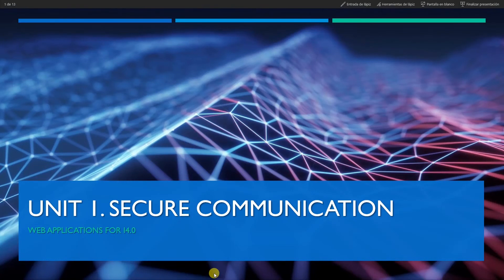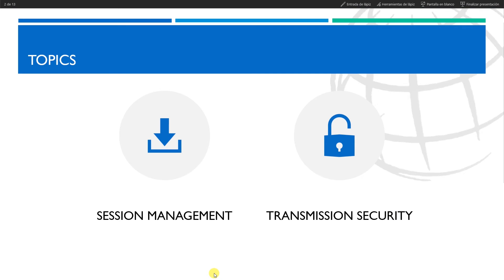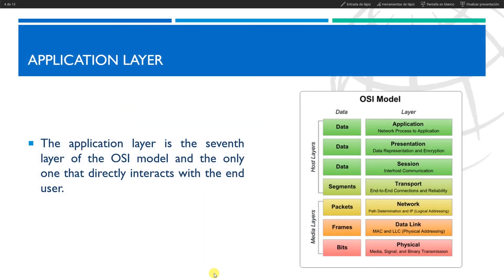We continue with Unit 1 in the security communication topic. In this video we are focusing on transmission security. We need to know first what is the application layer and why we are focusing on this layer. The application layer is a layer in the OSI model and the only one that directly interacts with the end user. It consists of protocols that focus on process-to-process communication across an IP network.